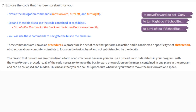Now that you've corrected your school bus sprite, it's time to explore the code that has been pre-built for you. Notice the navigational commands: move forward, turn left, and turn right. If you expand these blocks you can see the code contained in each one. Do not alter the code for the blocks or the bus will not move correctly. You'll use these commands to navigate the bus to the museum. These commands are known as procedures. A procedure is a set of code that performs an action and is considered a specific type of abstraction. Abstractions allow computer scientists to focus on the task at hand and not get distracted by the details. With the move forward procedure, all of the code necessary to move the bus forward one position on the map is contained in one place and can be collapsed and hidden, so you can call this procedure whenever you want to move the bus forward one space.